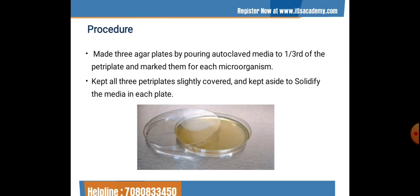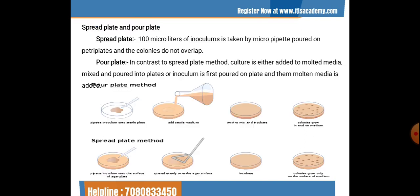After sterilization, the media is taken out and three agar plates are made by pouring autoclaved media to one-third of the petri plate, and marked for each microorganism. Keep all the petri plates slightly covered and set aside to solidify. Next, we learn about the spread plate and pour plate methods.